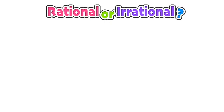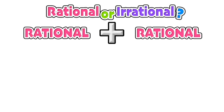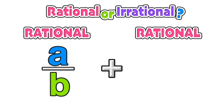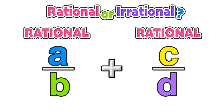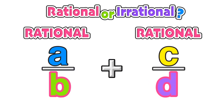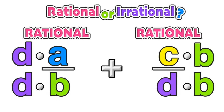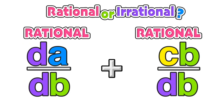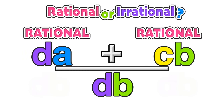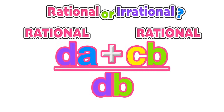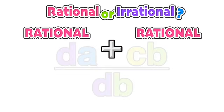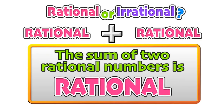Now we can start to explore operations between rational and irrational numbers. We can start by seeing whether or not the sum of two rational numbers is rational or irrational. So here we have two rational numbers, a over b plus c over d, where a, b, c, and d are all integers. Notice that we do not have a common denominator, so we're going to multiply the fraction on the left by d and the fraction on the right by b, giving us a common denominator of bd. Combining these together still leaves us with a ratio, therefore the sum of two rational numbers is still a rational number.